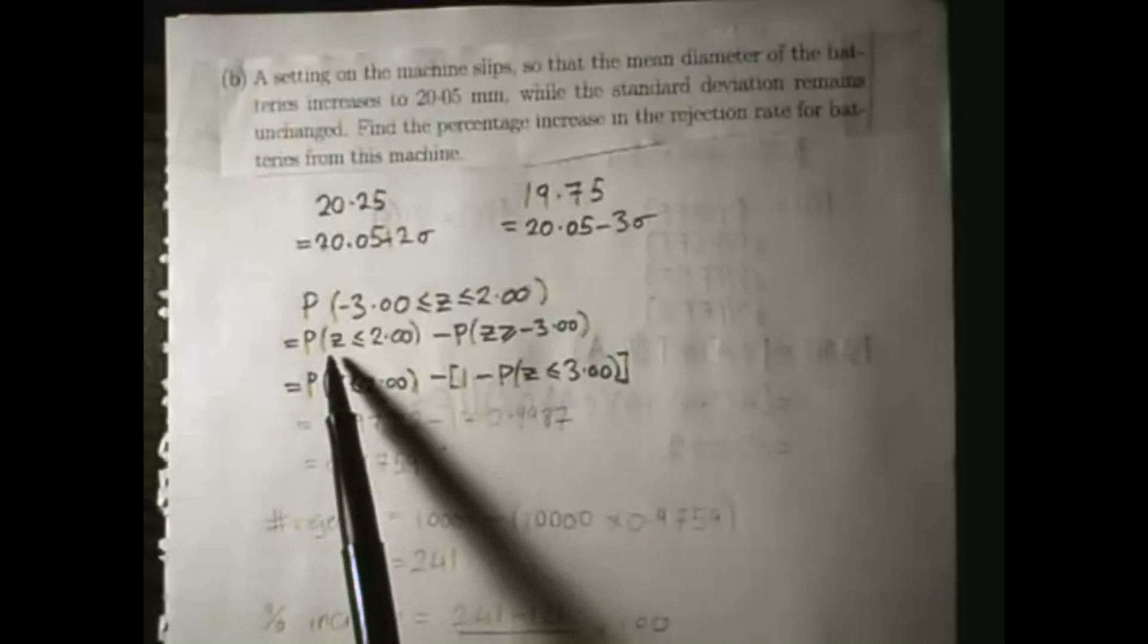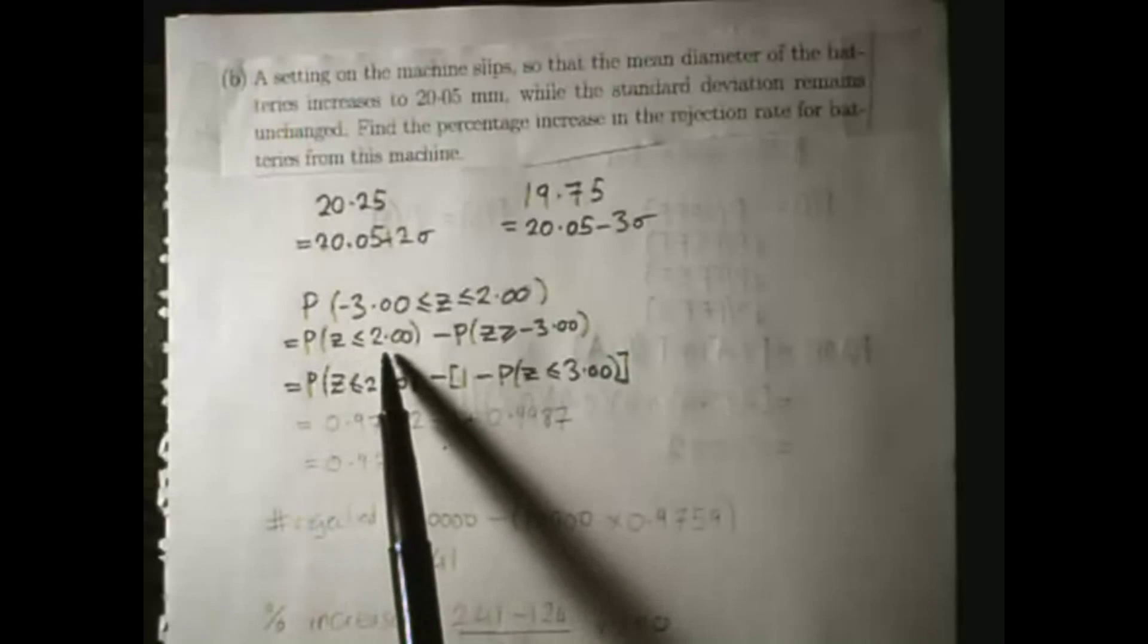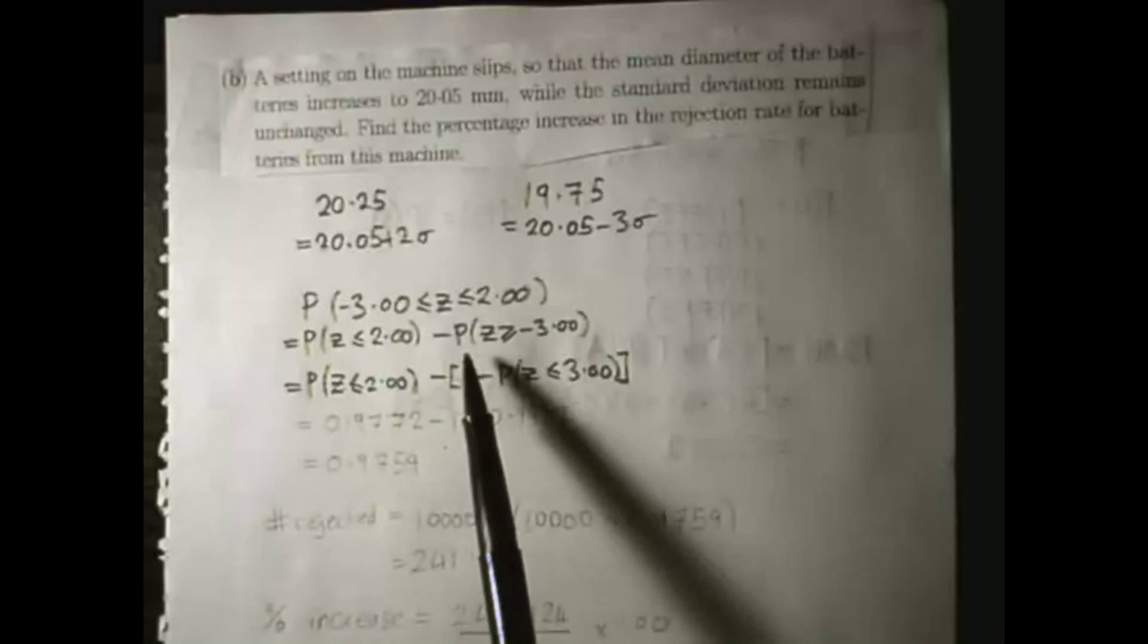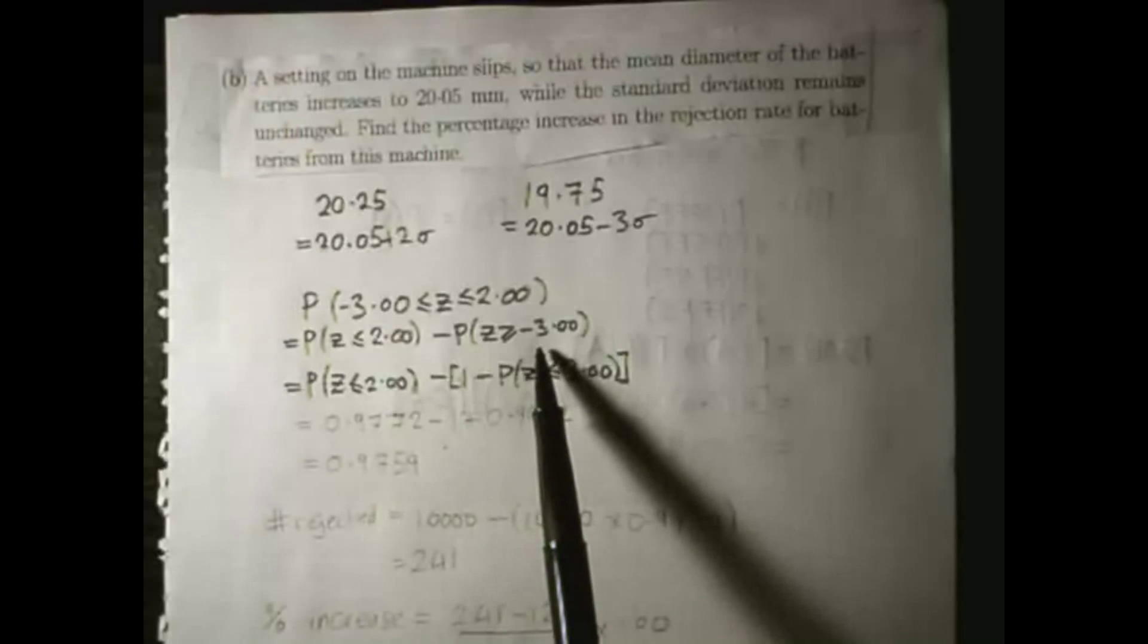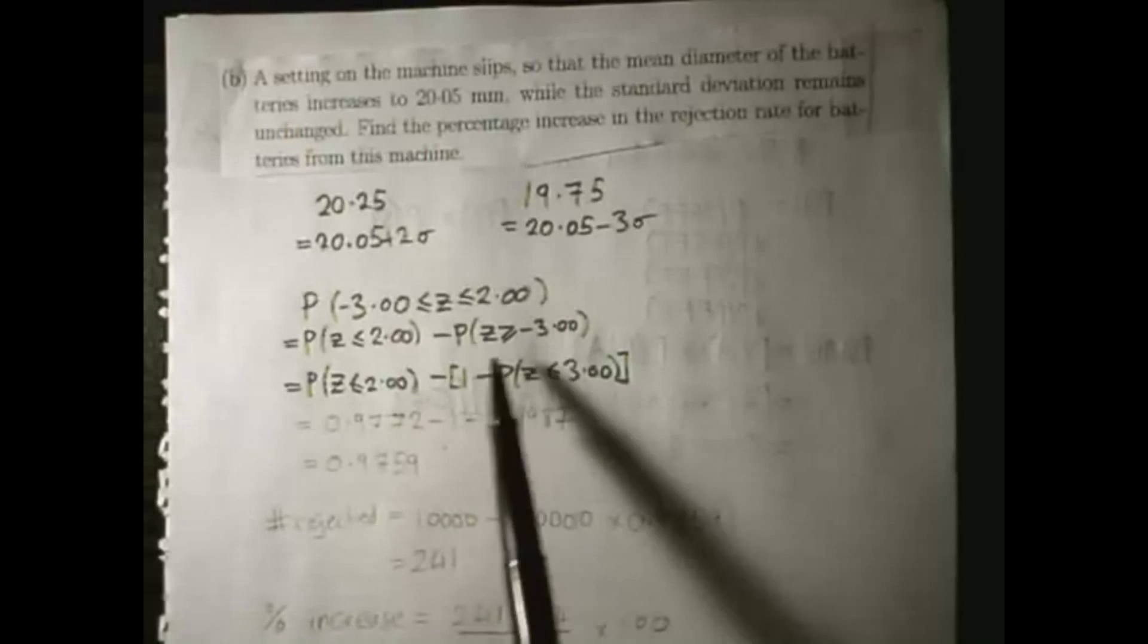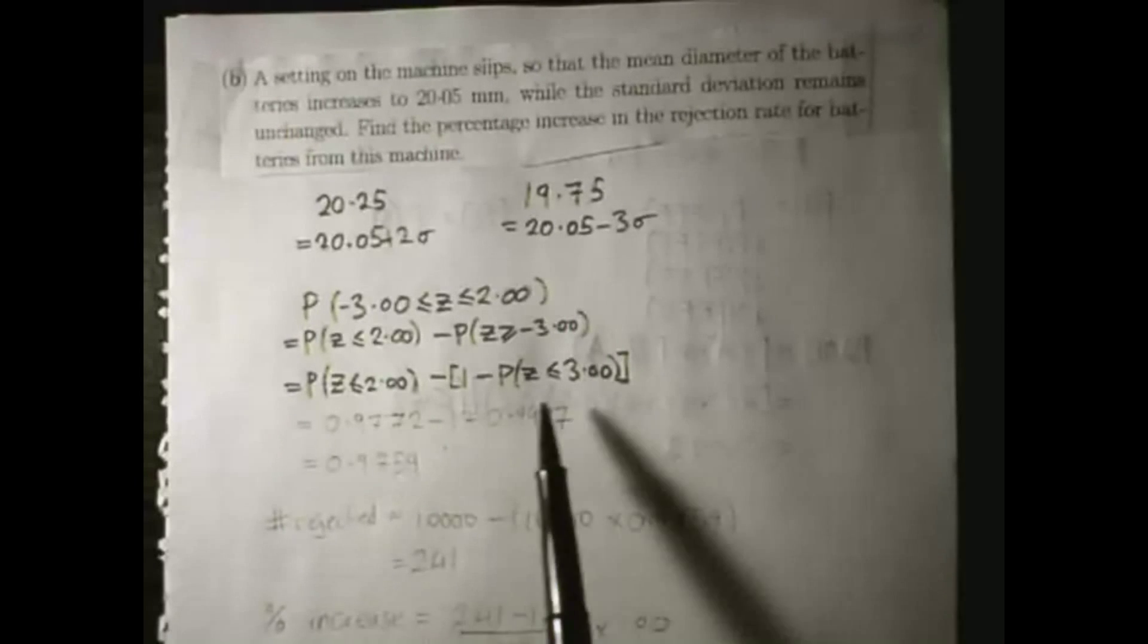So we're looking for where the diameter is less than 2 standard deviations minus where the diameter is greater than minus 3 standard deviations from the mean. Do the same thing as last time,